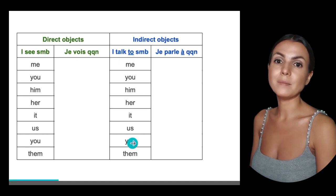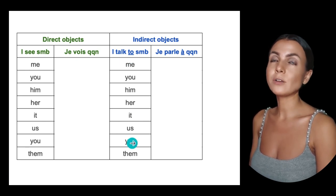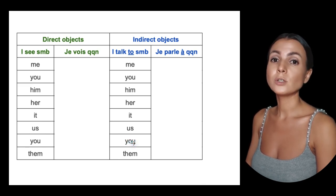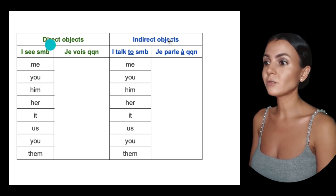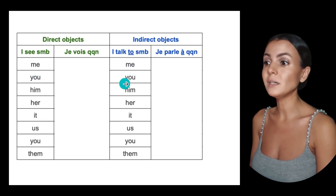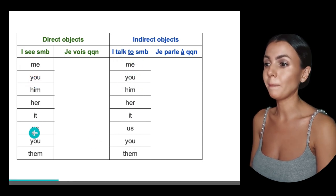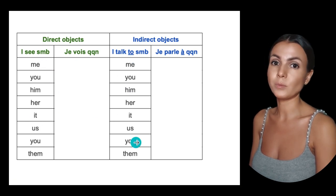Instead of saying 'I look at Lucy,' you will say 'I look at her,' so 'her' is an indirect object pronoun. In English, direct or indirect doesn't change — 'I see you' or 'I talk to you' are the same pronoun. But in French, there is a difference between direct pronouns and indirect pronouns. That's why we are studying this.